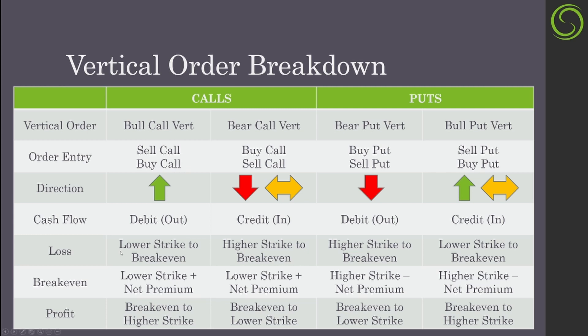Just like when you buy a call, you still want the stock to go up. This is going to be a cash flow of a debit out, so you're going to pay money for it. For losses, you're going to have limited losses — max loss is anything below the lower strike. You have incremental losses between the lower strike to break even, and then you start to have profits as you continue to go higher.